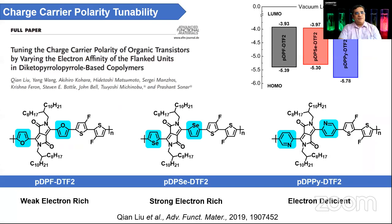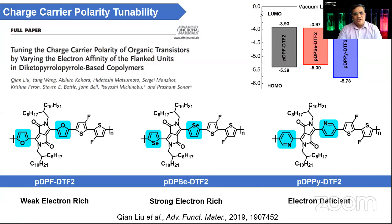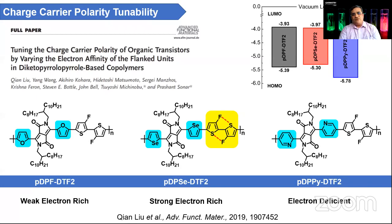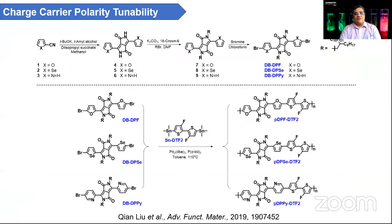We also made three different DPP polymers varying the flanking group — furan (blue), selenophene, and pyridine — keeping the rest of the polymer the same. The reason for selecting fluorine-substituted bithiophene is because of the interaction between sulfur and fluorine. We wanted to see what is going on with this type of molecular structure.